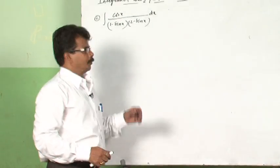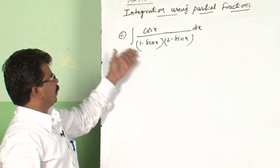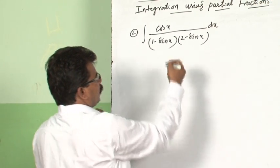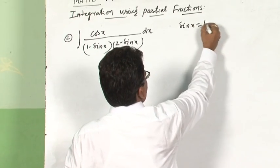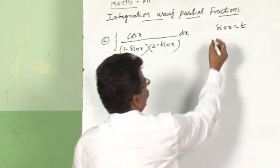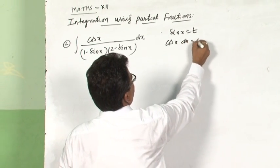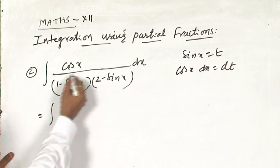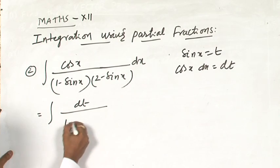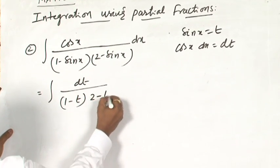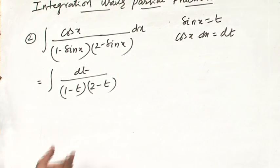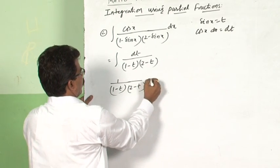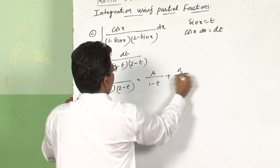Now we will see one more example using partial fractions combined with the substitution method. Consider the integral of cos x divided by (1 − sin x)(2 − sin x). The denominator is a product of two functions. Let sin x = t; differentiating gives cos x dx = dt. The integrand becomes the integral of dt divided by (1 − t)(2 − t), which can be resolved into partial fractions A/(1 − t) plus B/(2 − t).